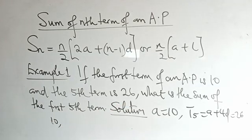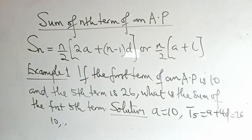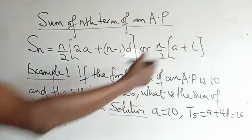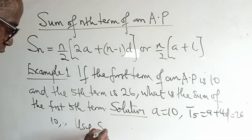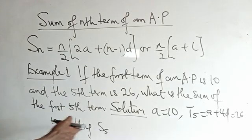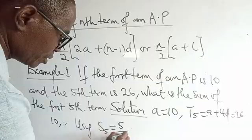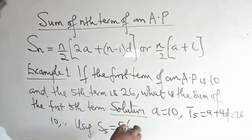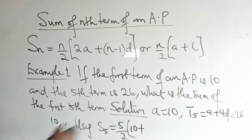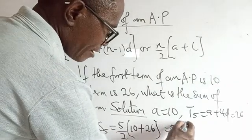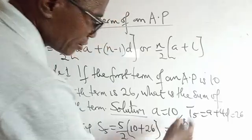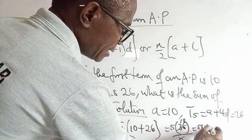So the first term is 10, but we don't know the second term or the common difference. This means we cannot use the formula containing d. So let's use the second one: S5 = 5/2 × (a + l) = 5/2 × (10 + 26) = 5/2 × 36 = 5 × 18 = 90.